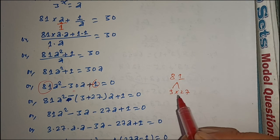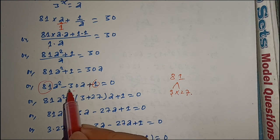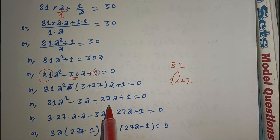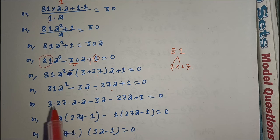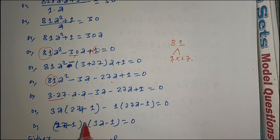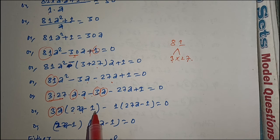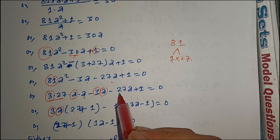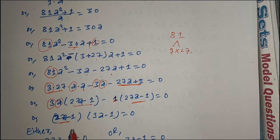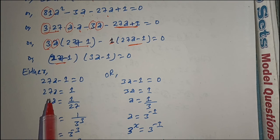Third problem: 3 to the power x plus 27 — substituting a, with 3 to the power x equals a. Factoring: 3a common, and 27a minus 1 in the bracket. So either 3a minus something equals zero or 27a minus 1 equals zero. From 27a minus 1 equals zero, a equals 1 upon 27.